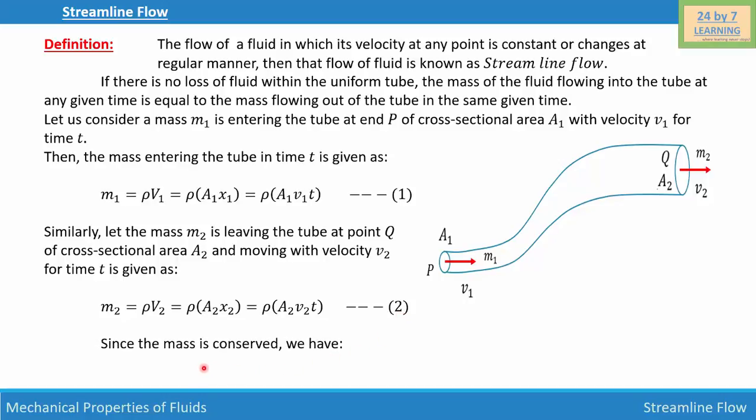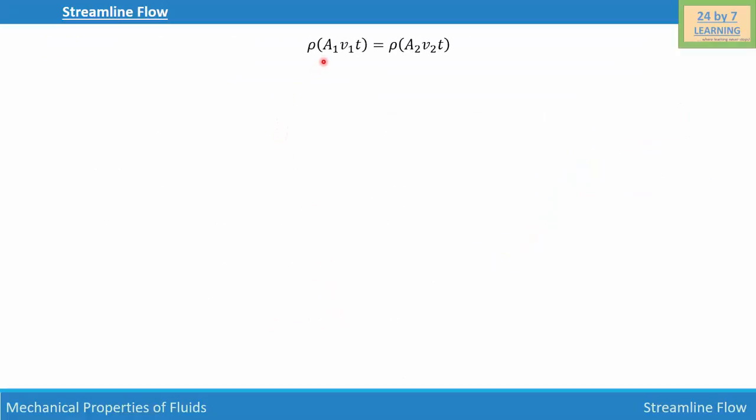As we know the mass is conserved so we can write m₁ = m₂. So what we are going to do is write this term equal to this term. If we do that we will write ρA₁v₁t = ρA₂v₂t.